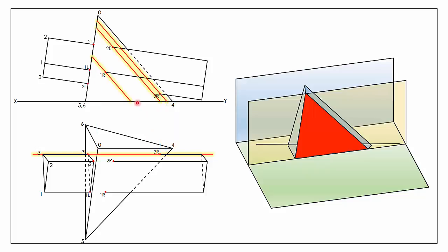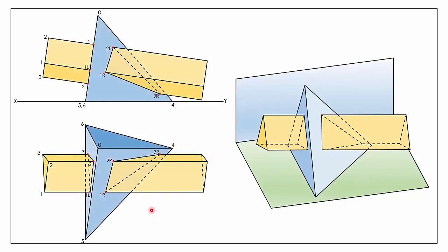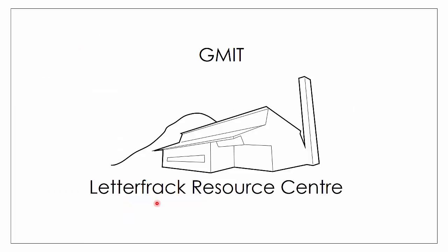All we do then is join up our points. In elevation we join them to give us our line of interpenetration, and we do the same in plan view. That completes the question using the vertical sections method. Our next video will cover a full Leaving Certificate question using this method. I hope this has been of some use to you — stay tuned for more videos, thank you very much.